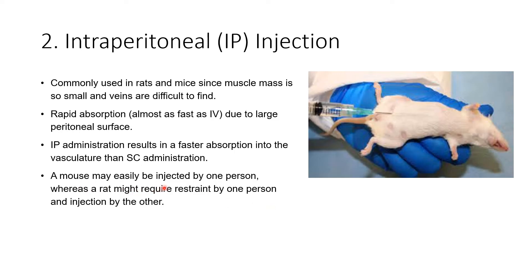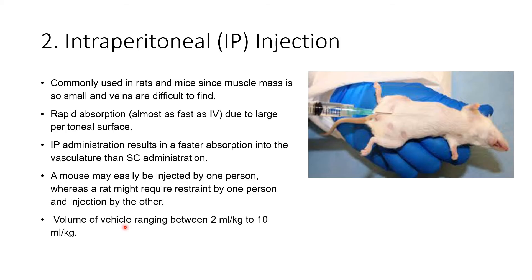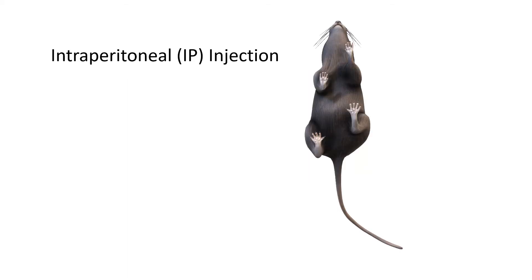A mouse may be easily injected by one person, whereas a rat may require restraint by one person and injection by another. The volume of vehicle ranges between 2 ml per kg to 10 ml per kg. In intraperitoneal injection, the rat receives the injection into the peritoneum region.